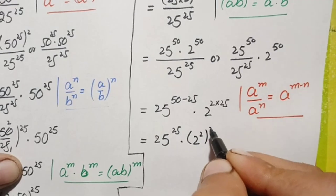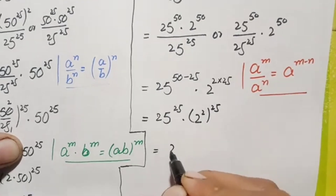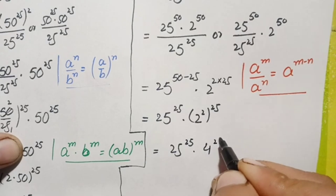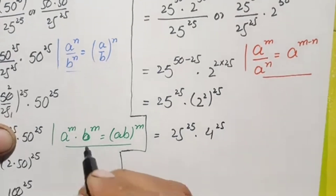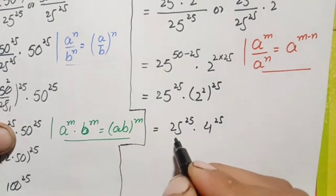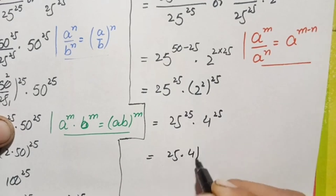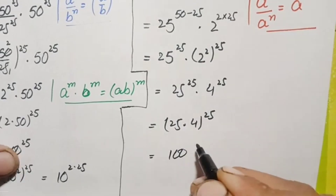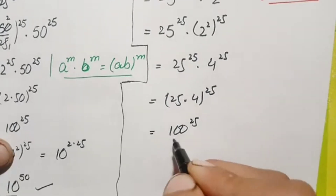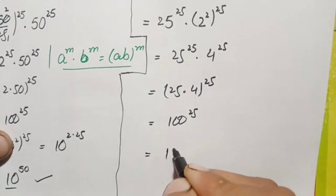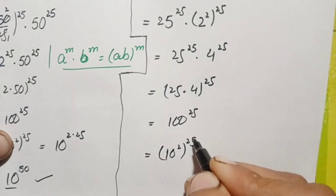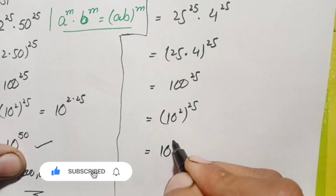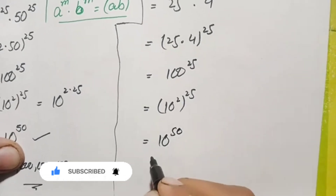This gives us 25 raised to power 25 times 2 squared raised to power 25, which is 25 raised to power 25 times 4 raised to power 25. Both numbers have the same power, so we multiply the bases: 25 times 4 is 100, giving 100 raised to power 25. Writing 100 as 10 squared and multiplying powers, we get 10 raised to power 2 times 25, which is 10 raised to power 50 — confirming our answer.